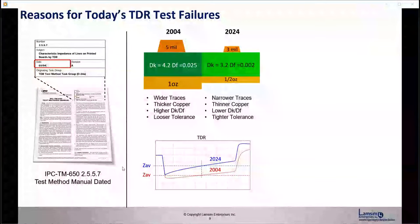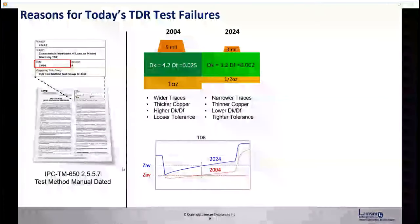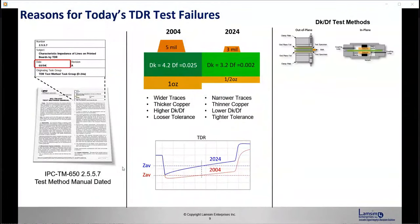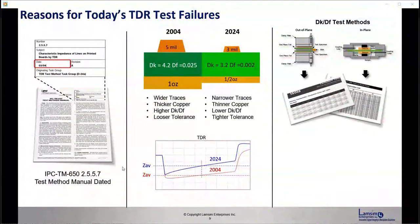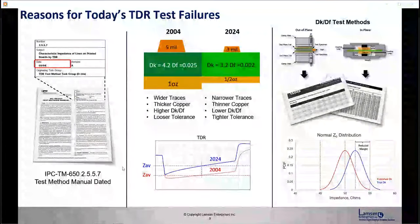Back in 2004, the typical TDR shown in red would be typically flat due to the geometries of the day. Today, with the narrow line widths and lower DK/DFs, we see a slow monotonic rise — steeper than it used to be compared to 2004. Also, some DK/DF test methods affect your impedance calculations, and those test methods find their way into the DK/DF construction tables, which are used to do your impedance calculations.